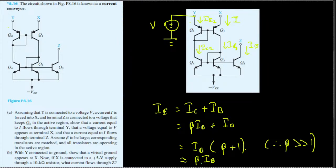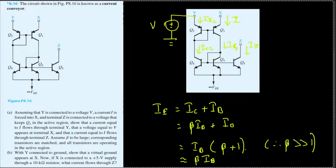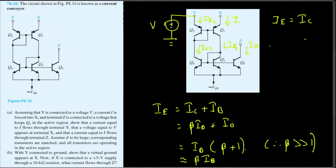Since ic = β·ib and ie ≈ β·ib, we can say ie ≈ ic. Therefore we can say ic1 = i, because whatever current goes into X goes exactly through the collector with negligible base current leaking away.